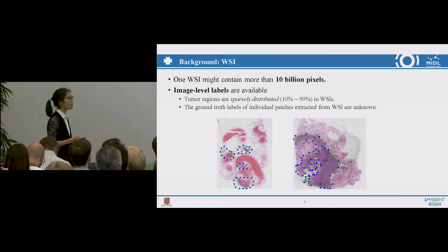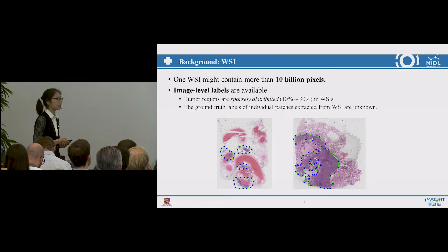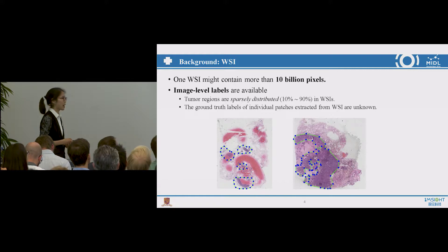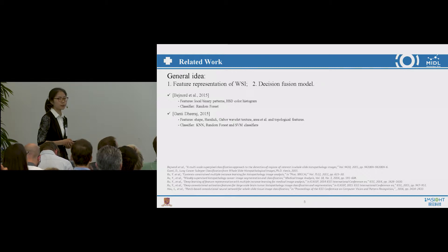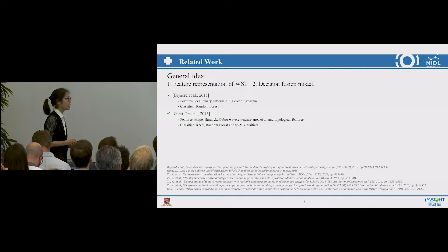A typical whole slide image may contain more than 10 billion pixels at the finest magnification. But in most cases, only the image-level labels are available, and the tumor regions are sparsely distributed in the whole slide image. The ground truth label for individual patches is actually unknown. Most researchers address this problem in two steps: first, finding a good feature representation for the whole slide image, then applying a decision fusion model like random forest, KNN, or SVM to output the image-level label.